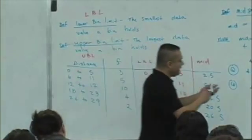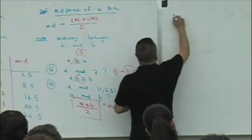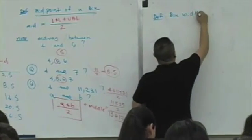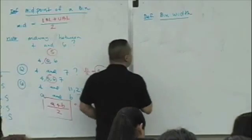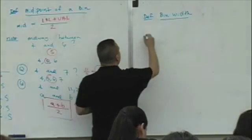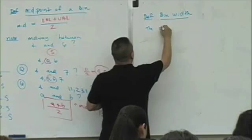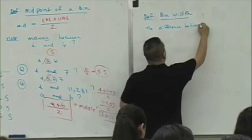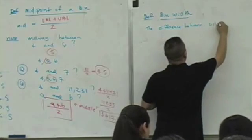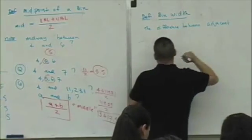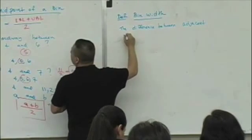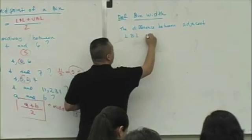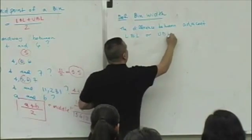So giving you a definition of bin width. It is the difference between adjacent lower bin limits. Or, if you prefer, upper bin limits.